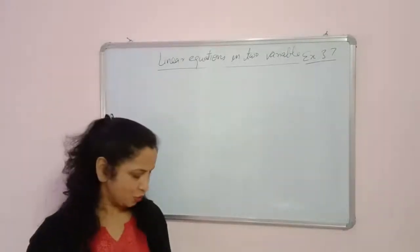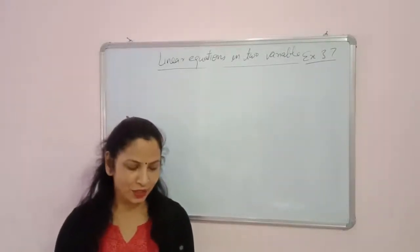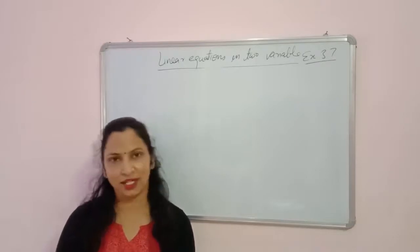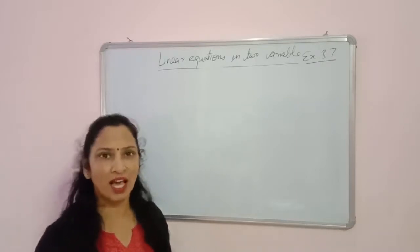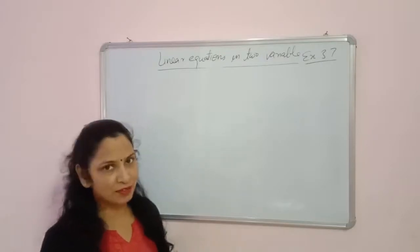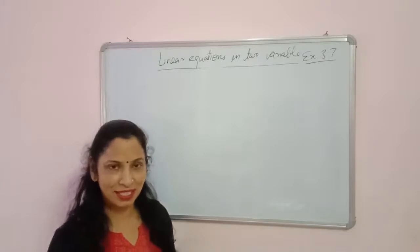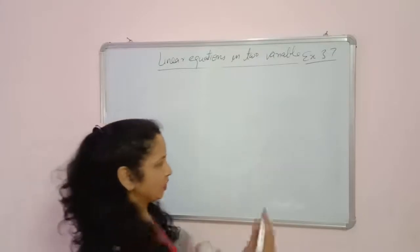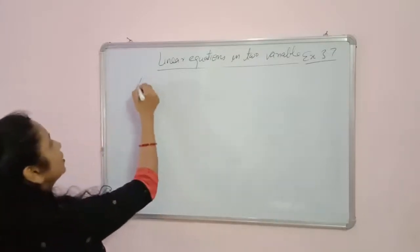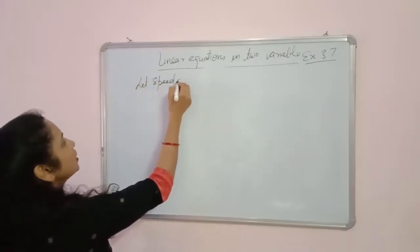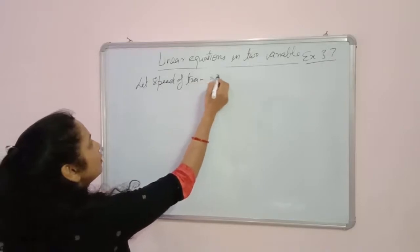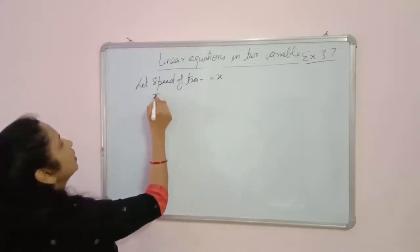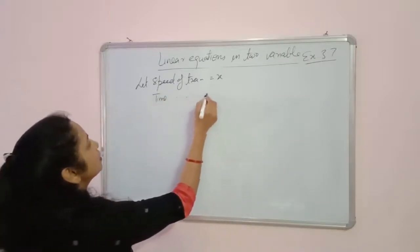Question 3: A train covered a certain distance at uniform speed. If the train had been 10 km/h faster, it would have taken 2 hours less. In this type of question, the easy method is: let the speed of the train be x and the time taken to cover the distance be y. The distance covered is x times y (speed multiplied by time).